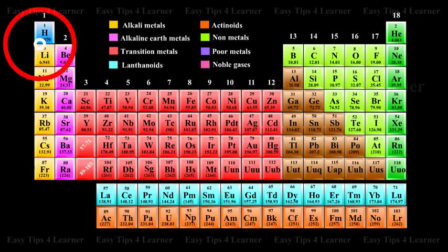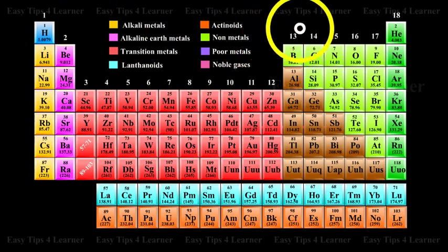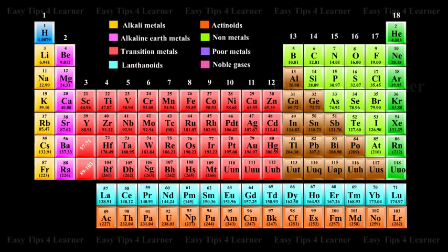As we move from left to right across a period, there is a regular decrease in atomic and ionic radii of the elements. This is due to the increase in nuclear charge and the additive electrons are added to the same electronic level.